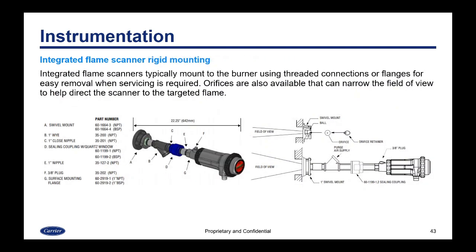An integrated flame scanner typically mounts to the burner using a threaded connection or flange so that it can be easily removed if servicing is required. You can also get an orifice which narrows the field of view to help the scanner see the targeted flame and not see any background noise or background flames. There's also a swivel or gimbal mount available so that you can position the scanner to aim in any direction and then tighten it down to maintain that position.